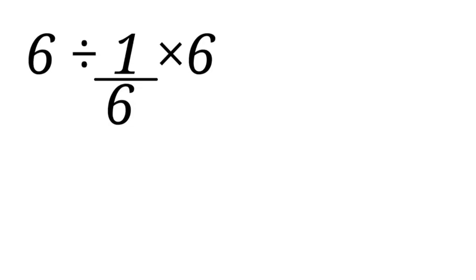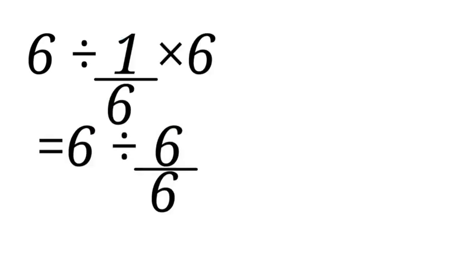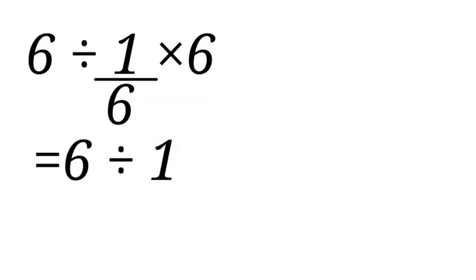6 divided by 1 over 6 times 6. So let's multiply this first. 1 over 6 times 6, that will give us 6 over 6. Then we do 6 divided by 6, that will give us 1. Then 6 divided by 1, that will give us 6.